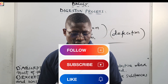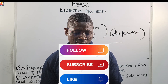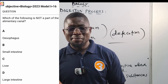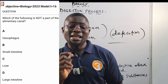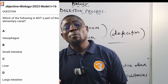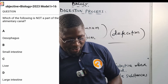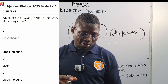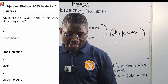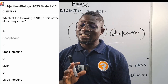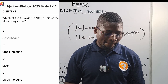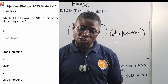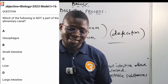Now let us see 2023 number 16 using the question search feature. It says: which of the following is not a part of the alimentary canal? I told you in the last episode about accessory organs — they participate in the digestion process but are not part of the alimentary canal. The options are: A — oesophagus, B — small intestine, C — liver, D — large intestine. Obviously, the liver is not part of the alimentary canal. It secretes bile which helps in the digestion of fat, but it is an accessory organ and not part of the gastrointestinal tract.